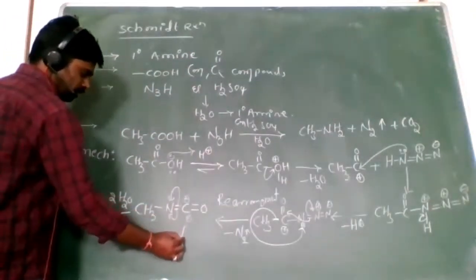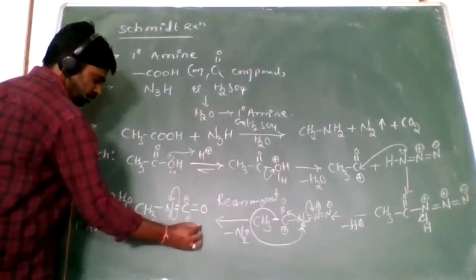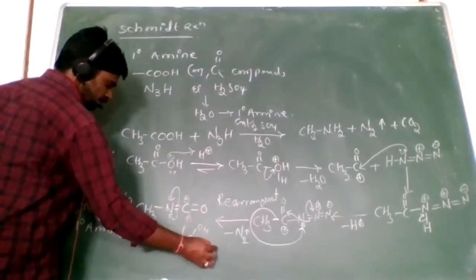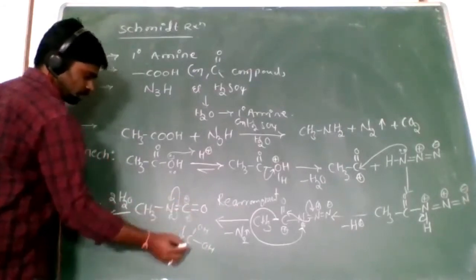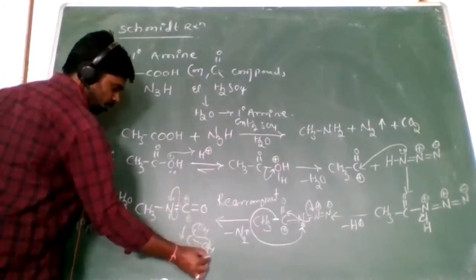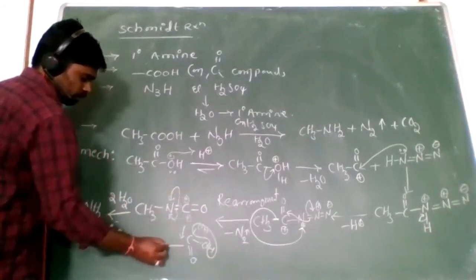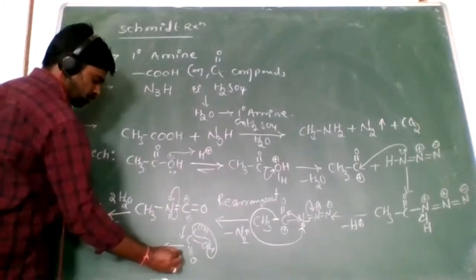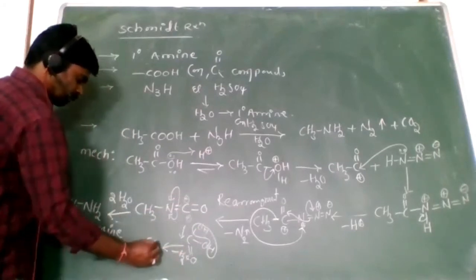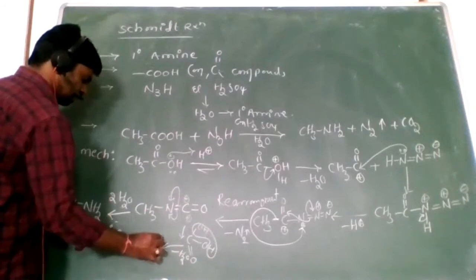Now look at how carbon dioxide is formed. Two hydroxide groups bond with the carbon at one carbon. Two hydroxides are unstable, so minus H₂O, and carbon dioxide is removed.